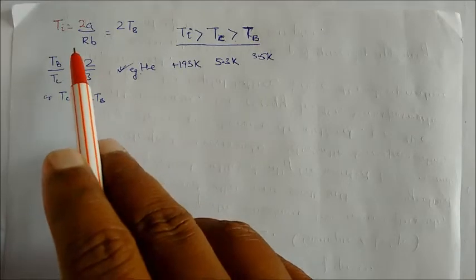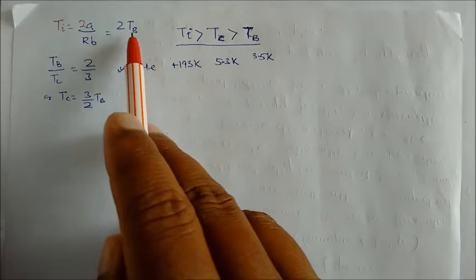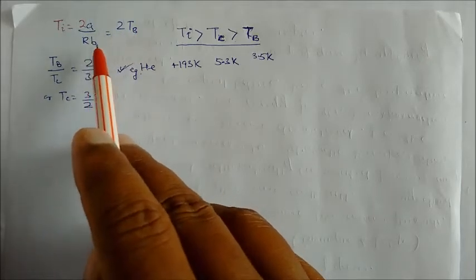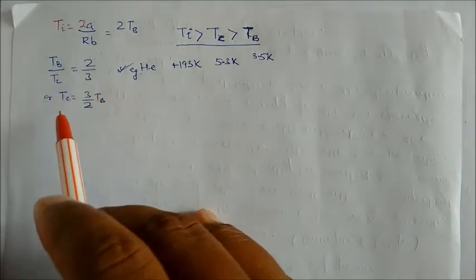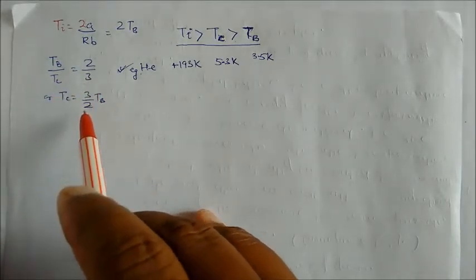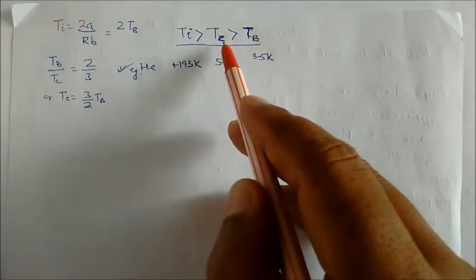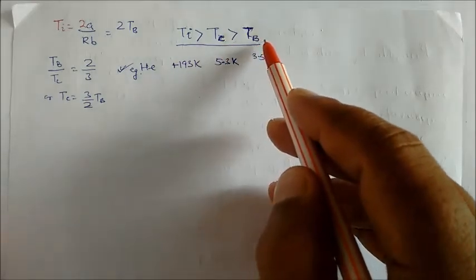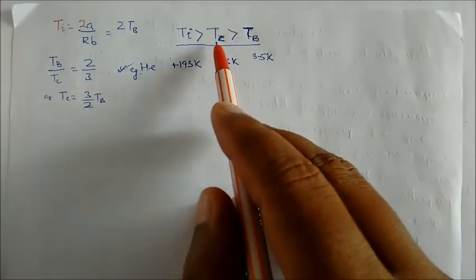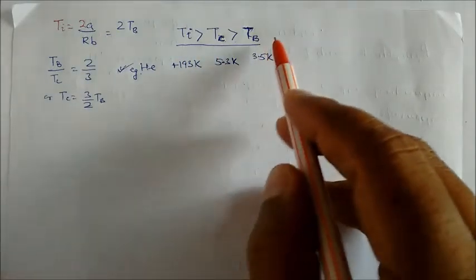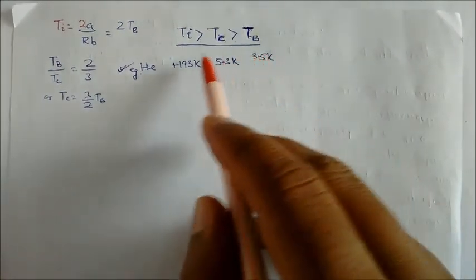Mathematically, the inversion temperature equals 2A divided by RB, which is also equal to 2 times the Boyle temperature. The Boyle temperature equals A divided by RB, and the ratio of Boyle temperature to critical temperature equals 2 to 3, giving critical temperature equal to 3/2 times B. The order is: inversion temperature is greater than critical temperature, which is greater than Boyle temperature. For example, helium has an inversion temperature of 193 Kelvin, a critical temperature of 5.3 Kelvin, and a Boyle temperature of 3.5 Kelvin.